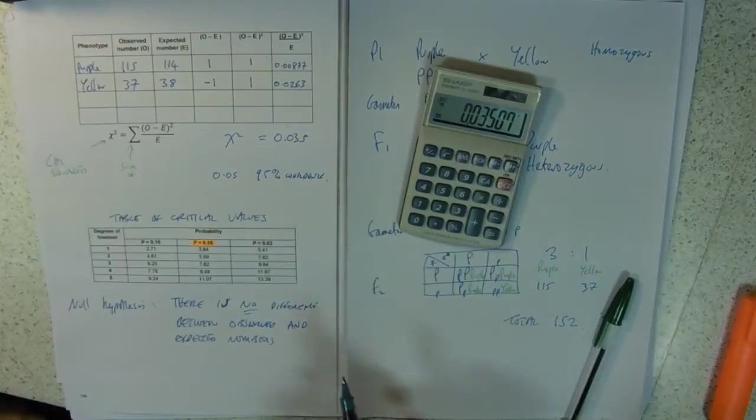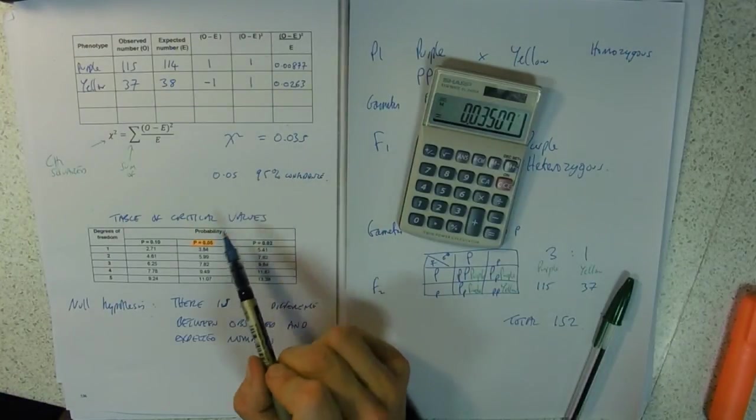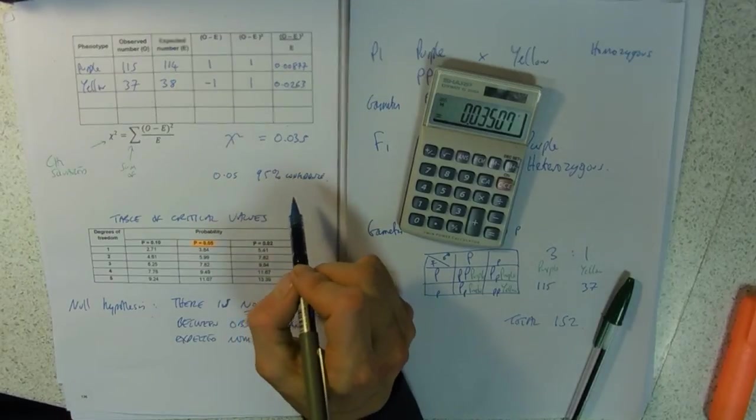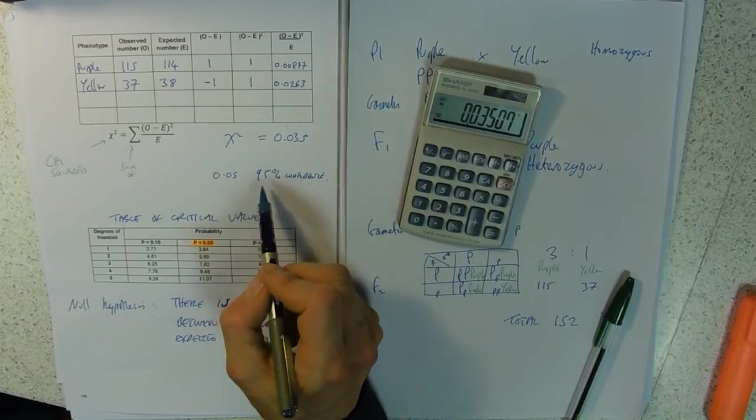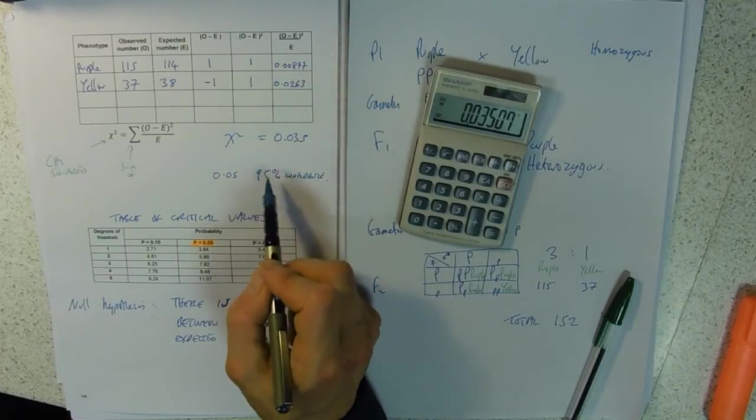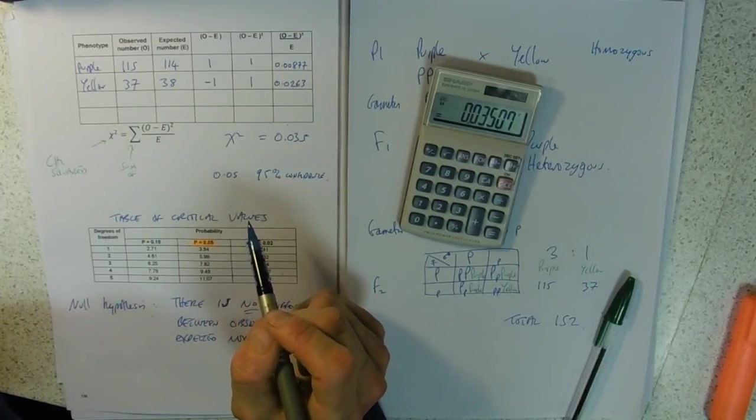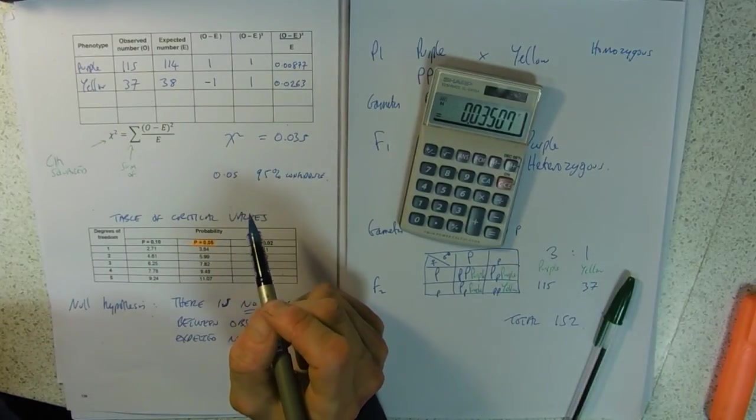0.05 is the same as our 95% confidence, so we're 95% confident. You can't be 100% confident - there's always going to be some experimental error. We arbitrarily select that, which is equivalent to a 1 in 20 chance of a screw-up.